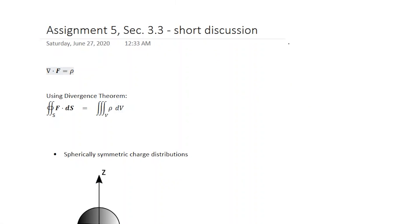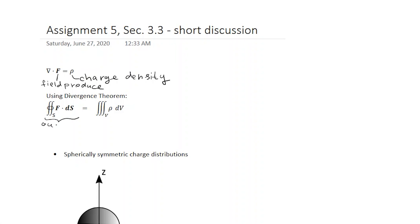In the reading assignment and in lectures, you saw how when you are given some irrotational field F and you're told that its divergence is equal to some charge density rho — the vector field produced by this charge density. You saw how to use the divergence theorem to get from this point form to this integral expression where on the left-hand side you would have outward flux of the vector field through the surface S equal to the total charge enclosed inside of the surface.